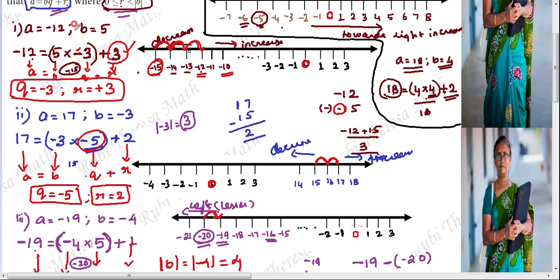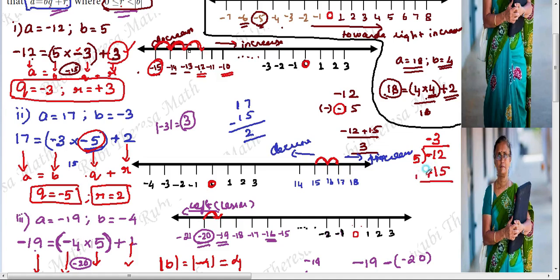Now using the normal division method for subdivision one: minus 12 is the dividend, 5 is the divisor. Choose quotient minus 3; 5 threes are 15, so minus 15. Performing subtraction with symbol change: plus 15 minus 12 equals 3. So quotient is minus 3 and remainder is plus 3.